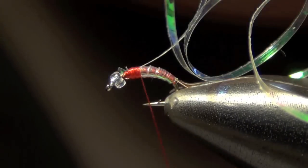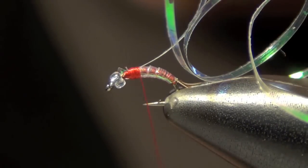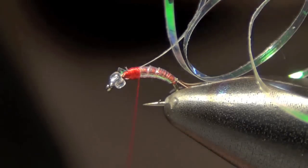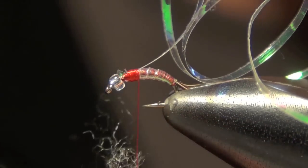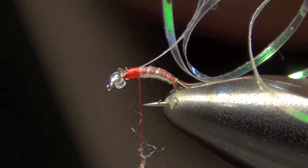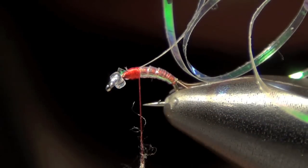Then I'm going to take some tan or rainbow colored dubbing and I'm going to apply that to the thread. Very thin. I don't want to put too much on, I don't want it to build up too fast.